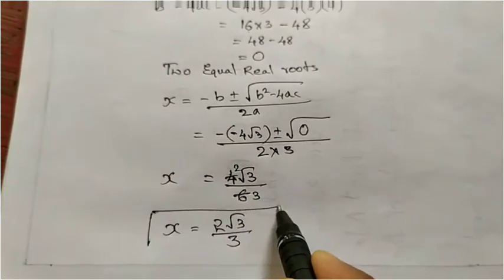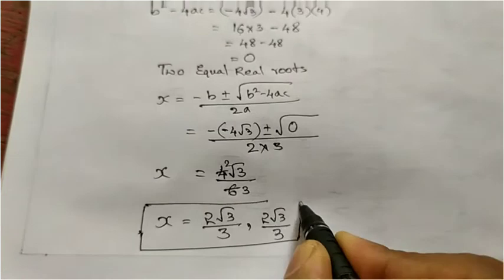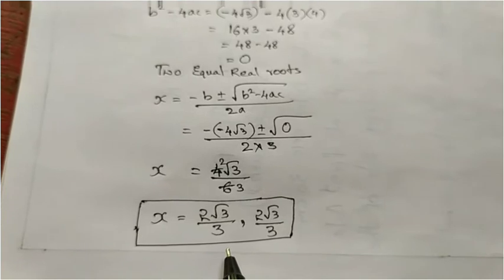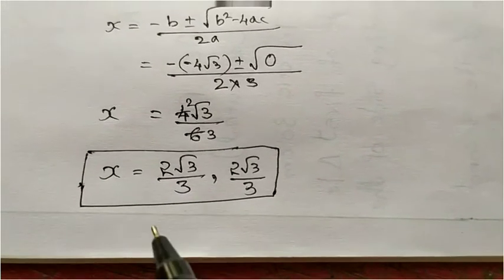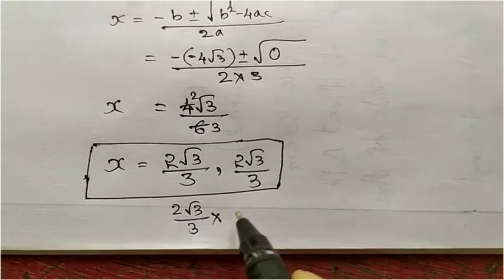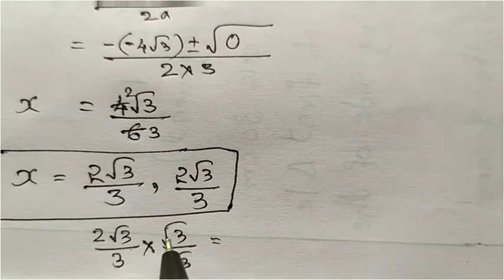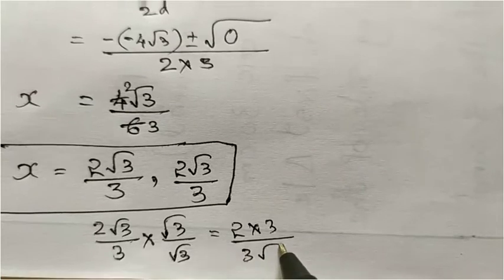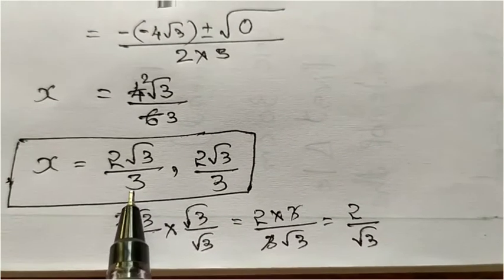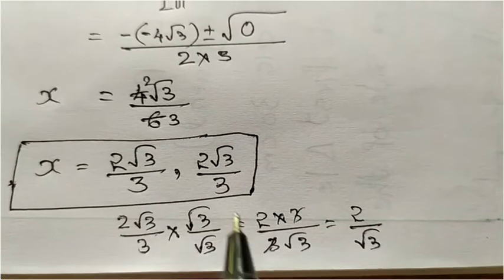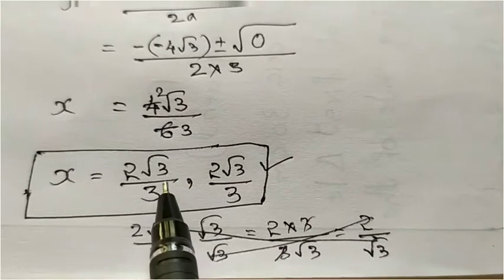This is our final answer. You have to write it twice — 2 root 3 by 3 and 2 root 3 by 3 — because we always get 2 equal real roots. In the back of the book they rationalized the answer by multiplying by root 3 over root 3, getting 2 root 3 into root 3 over 3, which simplifies to 2 root 3. But we should keep the denominator as a rational number, so just follow this answer: 2 root 3 by 3. Both are correct, but no need to do the extra rationalization step.